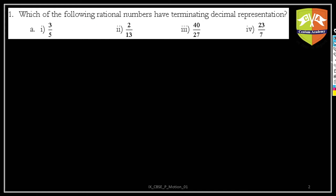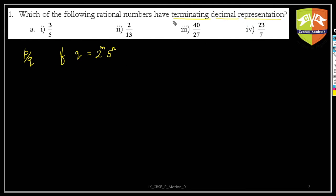The question asks which rational numbers have terminating decimal representation. Terminating means the decimal has to end — it cannot be recurring or non-repeating. A rational number is of the form p/q. If q is equal to 2^m × 5^n, then the decimal representation is going to be terminating. So any denominator that is only powers of 2 and powers of 5 will give a terminating decimal.